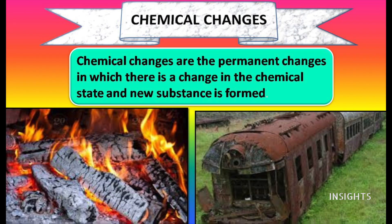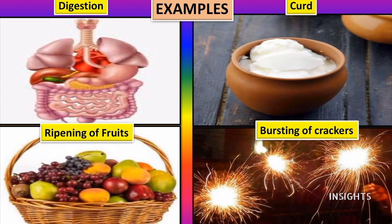Now let us see about chemical changes. Chemical changes are permanent changes in which there is a change in the chemical state and a new substance is formed. For example, burning of wood — when you burn wood, it converts into ash, which is a new substance with different chemical properties than wood. Rusting of iron: when iron is exposed to air and moisture, it gets oxidized and forms iron oxide, that is rust, and it is permanent. Digestion of food, formation of curd from milk, ripening of fruits, bursting of crackers — all these are examples of chemical changes.